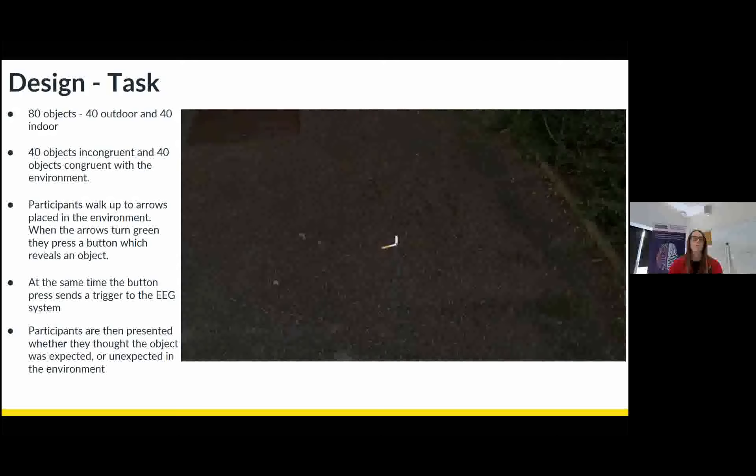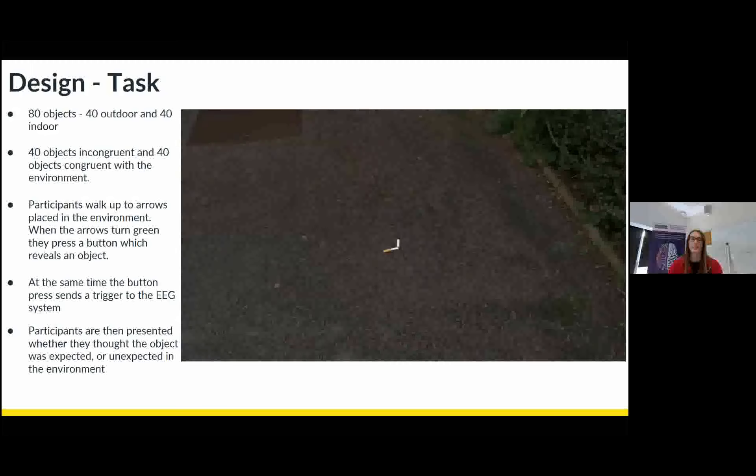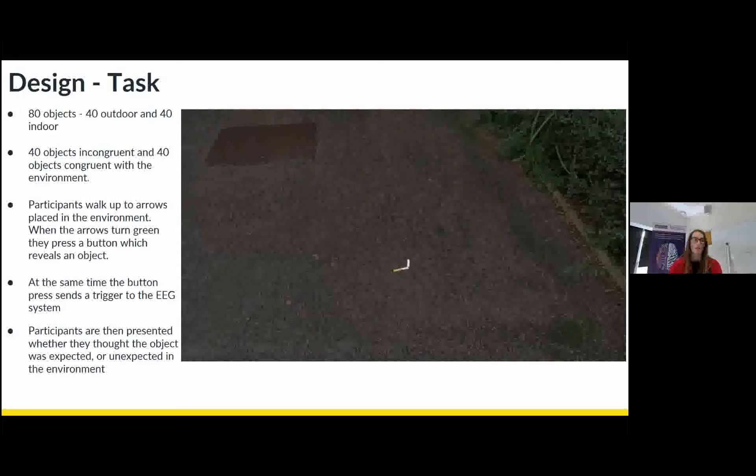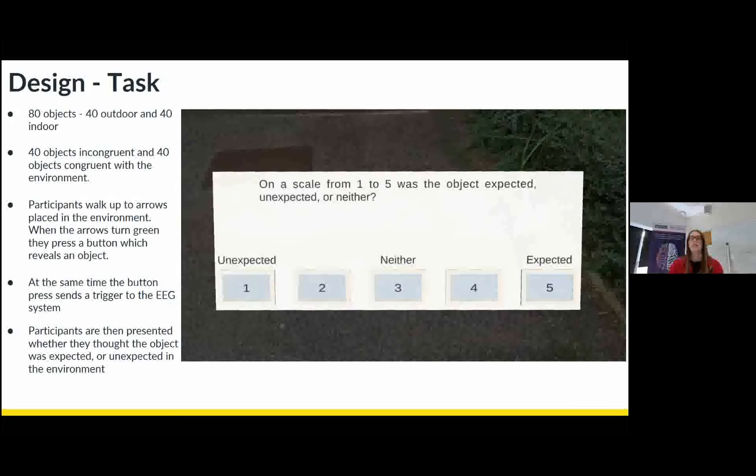So as I say, the participant presses a button, an object appears. And all the participant has to do is look at the object for as long as it's visible. And then when the object disappears, they're presented with a question, asking them how expected they found the object on a scale from one to five, with one being unexpected and five being expected.